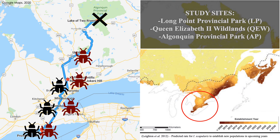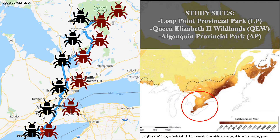Since the current distribution of both tick species will expand northwards as the climate warms, it is important to document the relationship between deer mice and their ectoparasite communities now, while there are varying degrees of tick establishment, to better understand how these relationships may change as the tick species ranges expand, and they encounter naïve populations of not just deer mice, but other potential hosts.